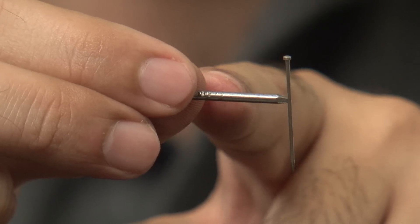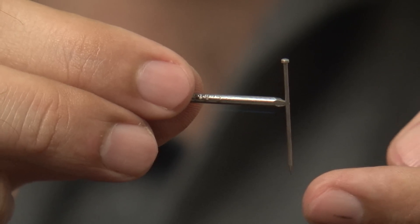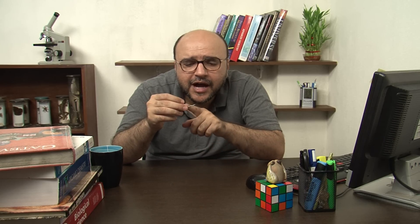Now this is an iron nail which we have often seen. It is actually attracting this particular pin which is sticking to it. But how does this happen? It happened because we created a temporary magnet out of this nail.